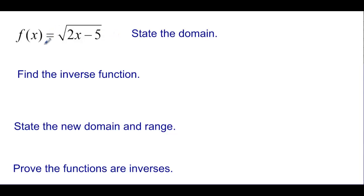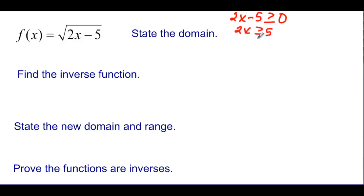Let's try again with a different, more interesting-looking graph. State the domain of this function. That says 2x minus 5. We know that radicals have to be greater than or equal to 0 underneath. So we take what's underneath and set it greater than or equal to 0: 2x ≥ 5, and so x is greater than or equal to 5/2, or 2.5.